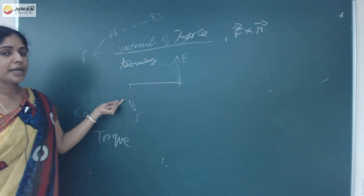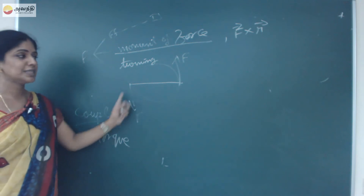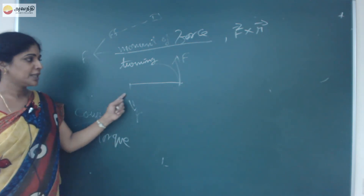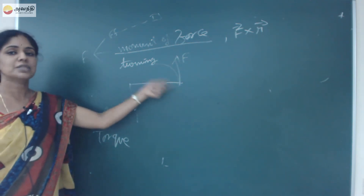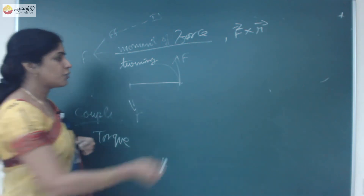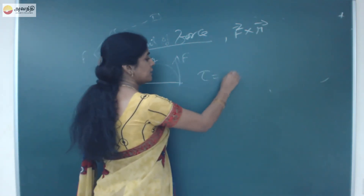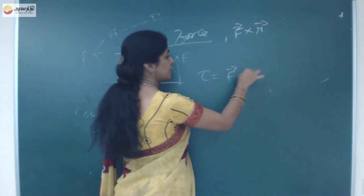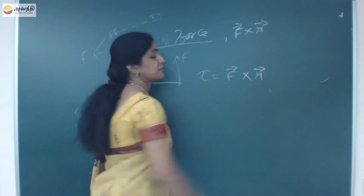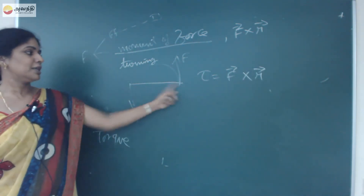The couple consists of two equal forces acting in opposite directions. To find the torque of the couple: torque is equal to one of the forces into the perpendicular distance between these two forces.